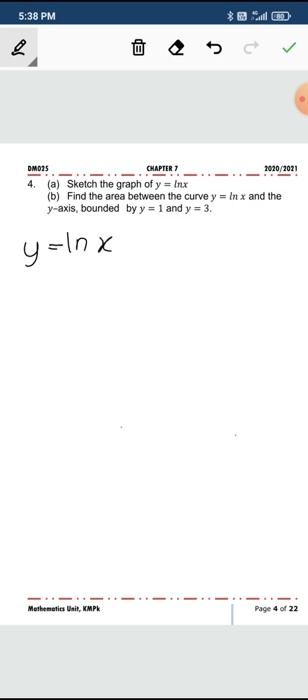So if you recall back, this graph or this function... this is your y-axis and this is your x-axis. The ln x has x-intercept at x equals 1, and the curve is like this.